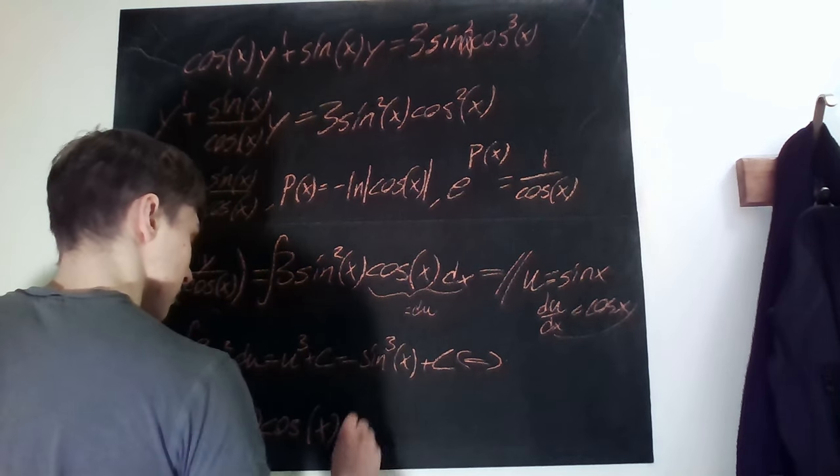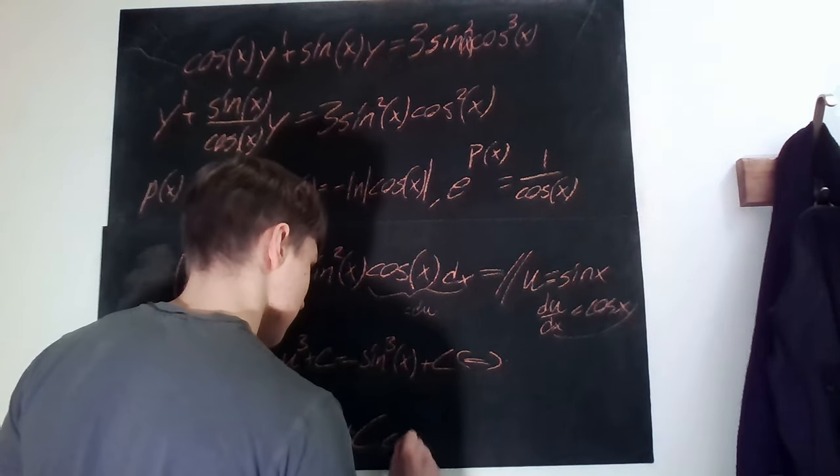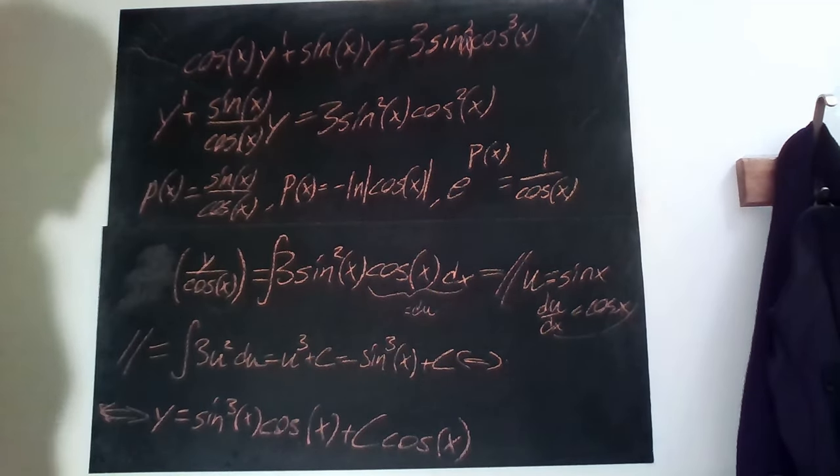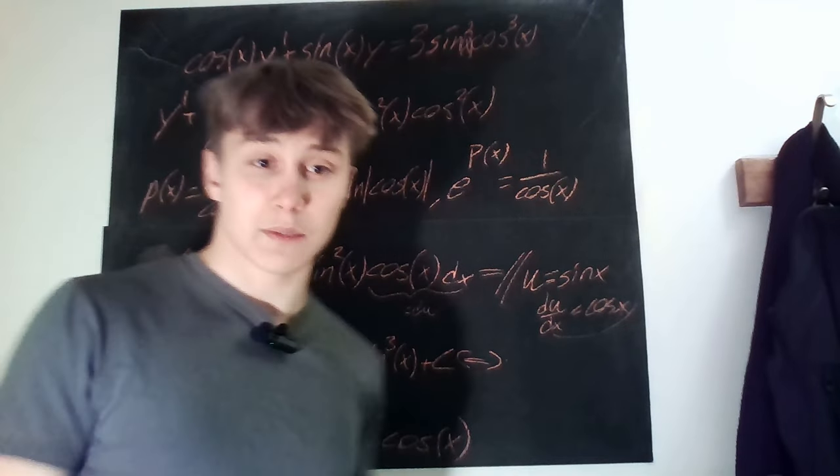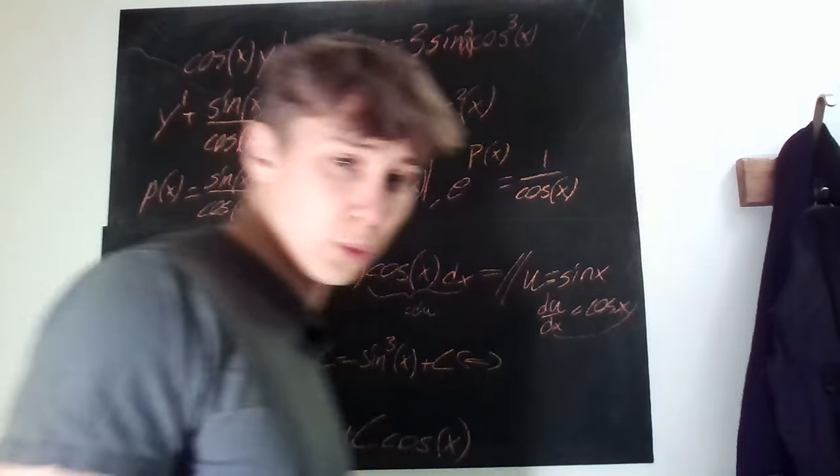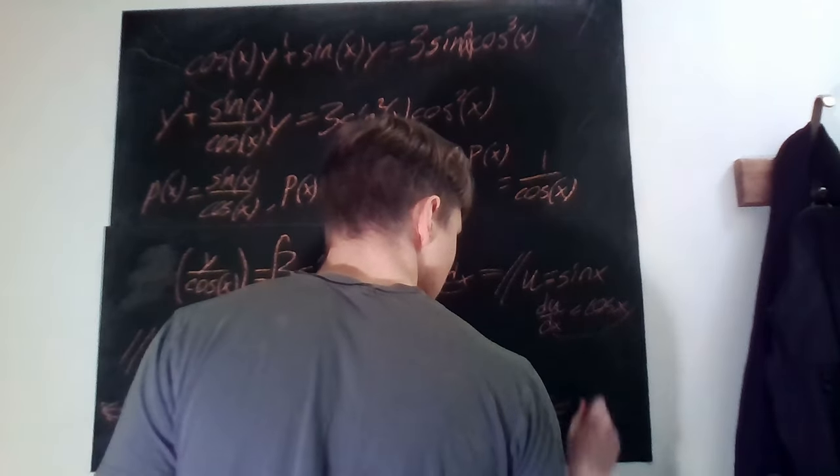of x plus c times cosine of x. And then we're done with the second part. So this is the complete solution. We have one unknown variable, yes I can write that also, c is some real number.